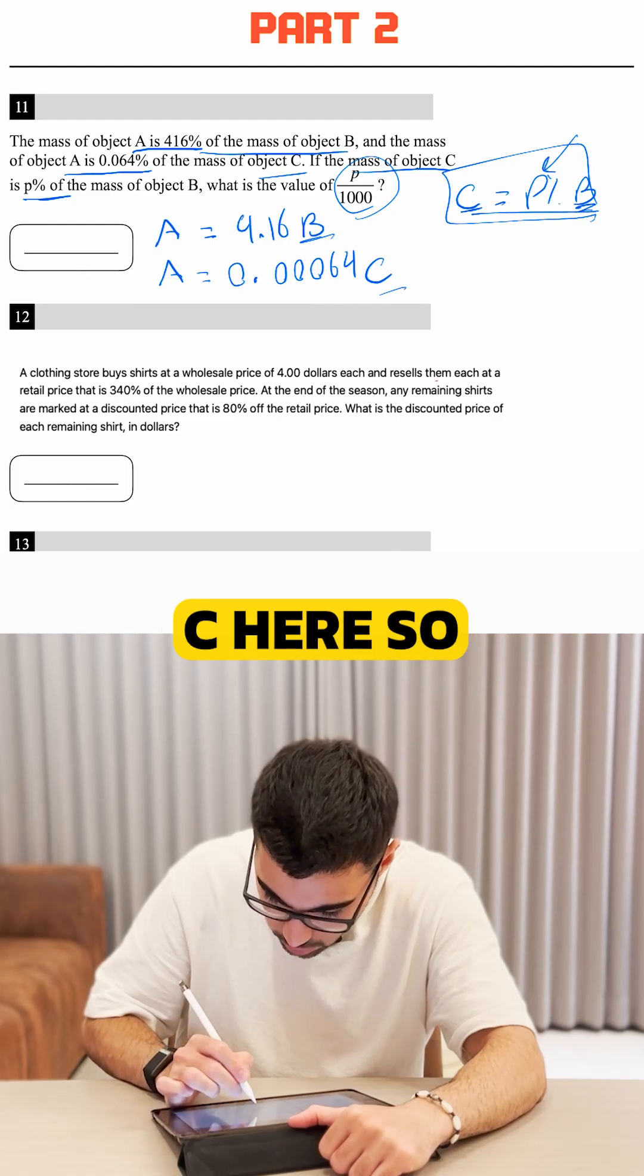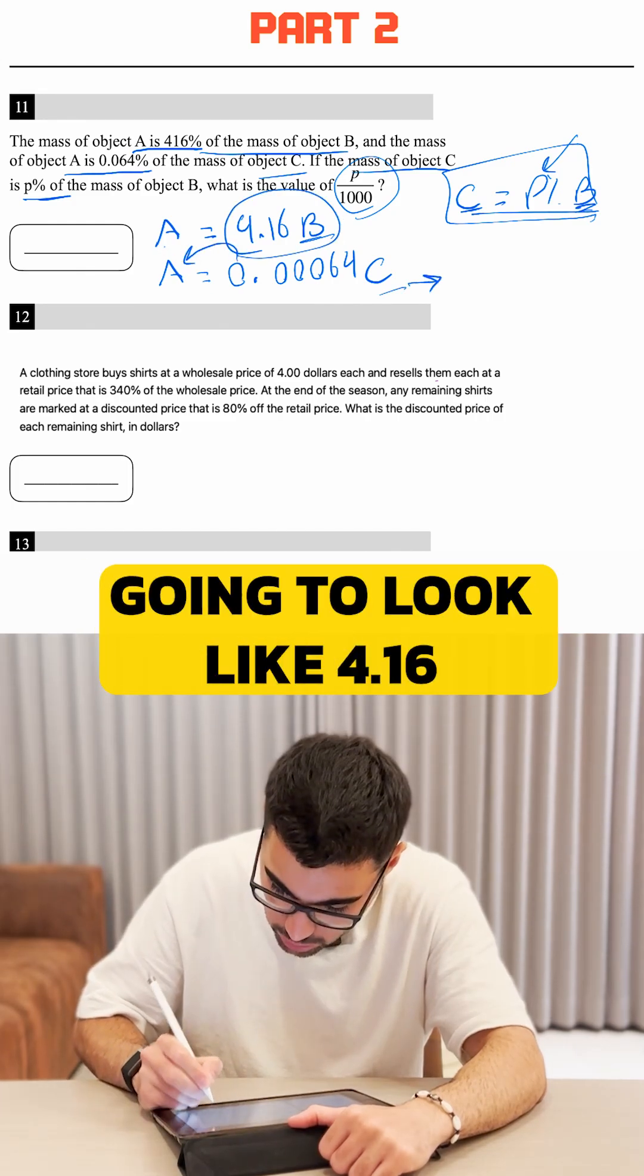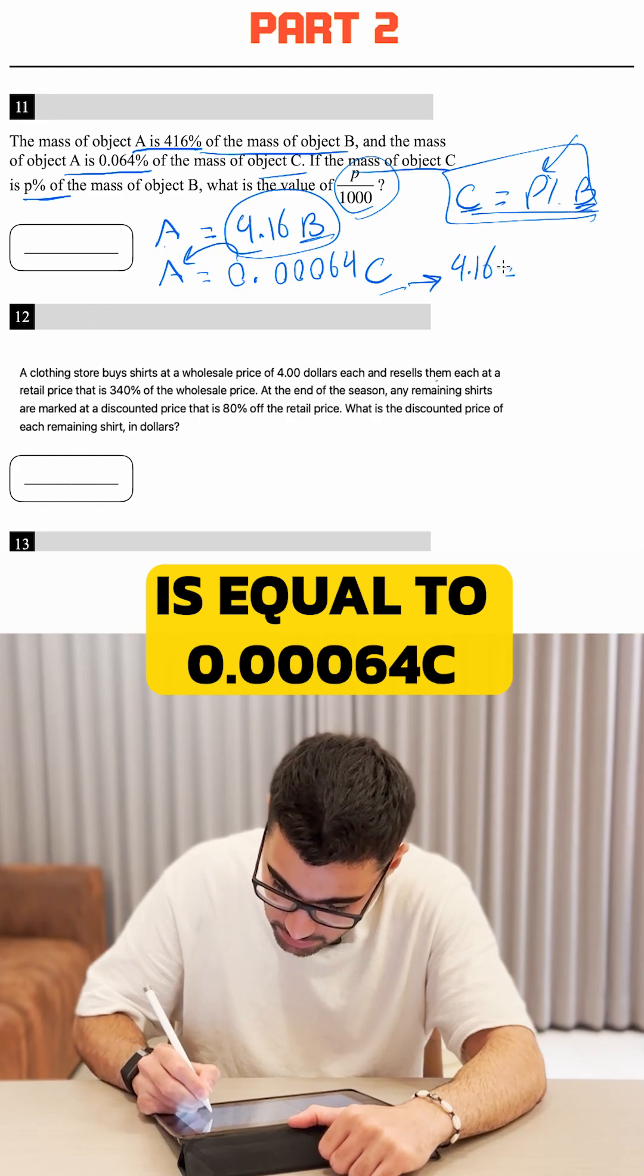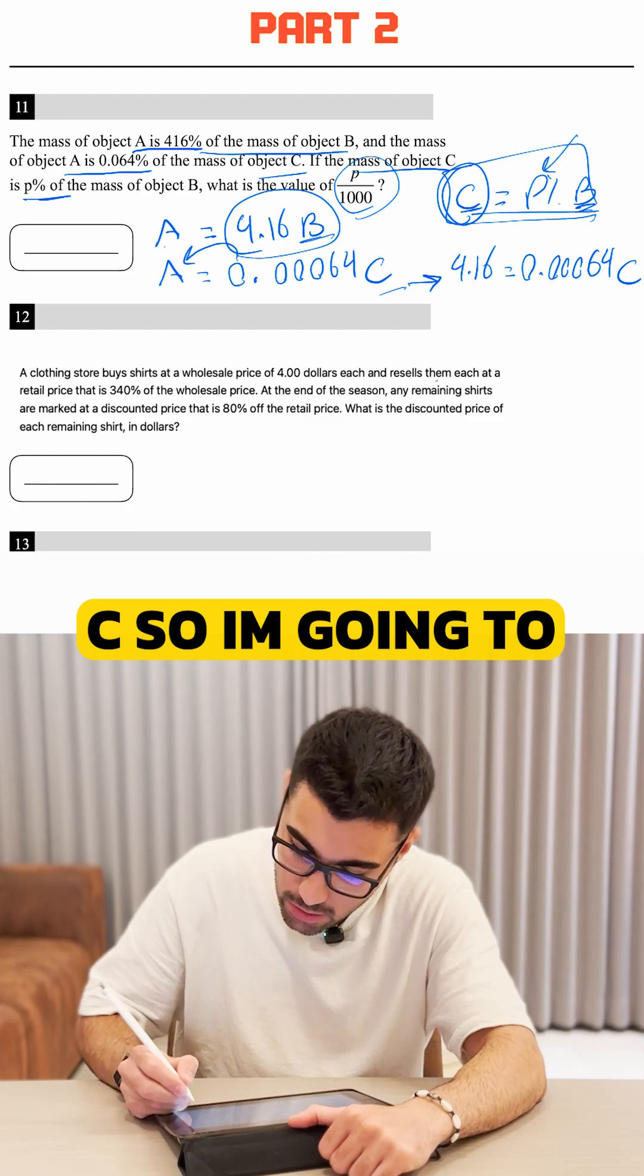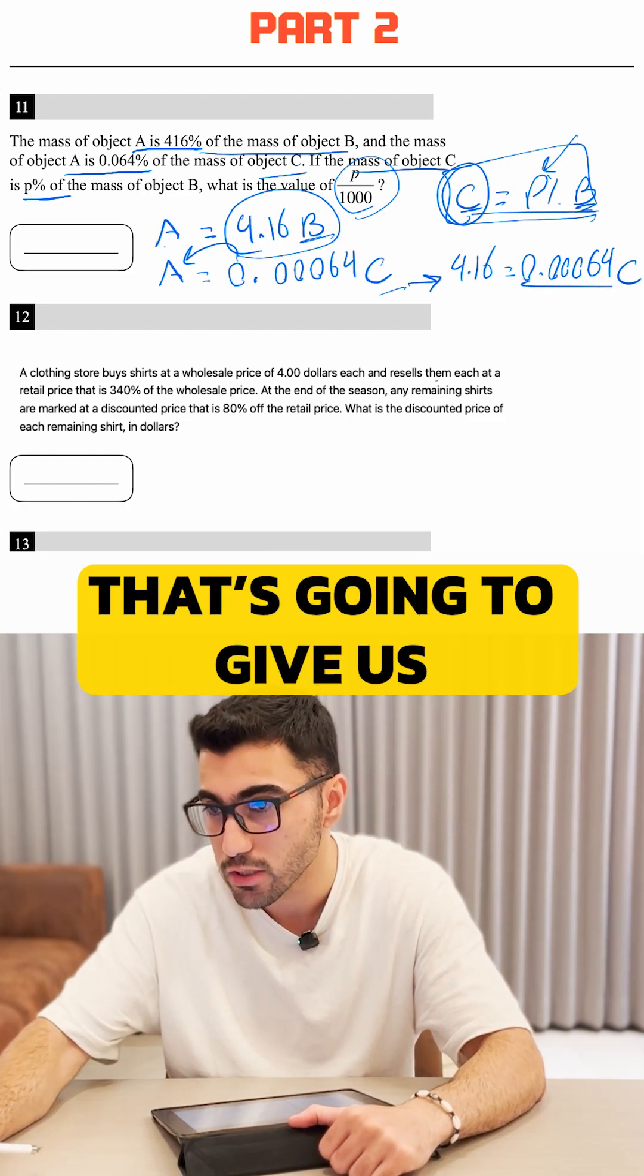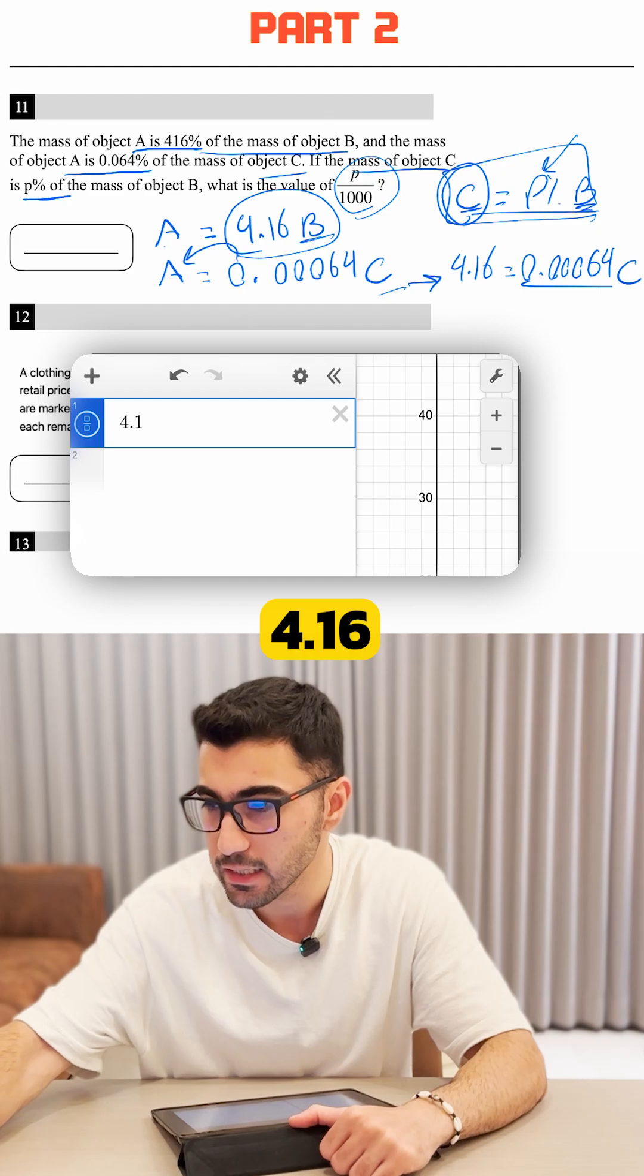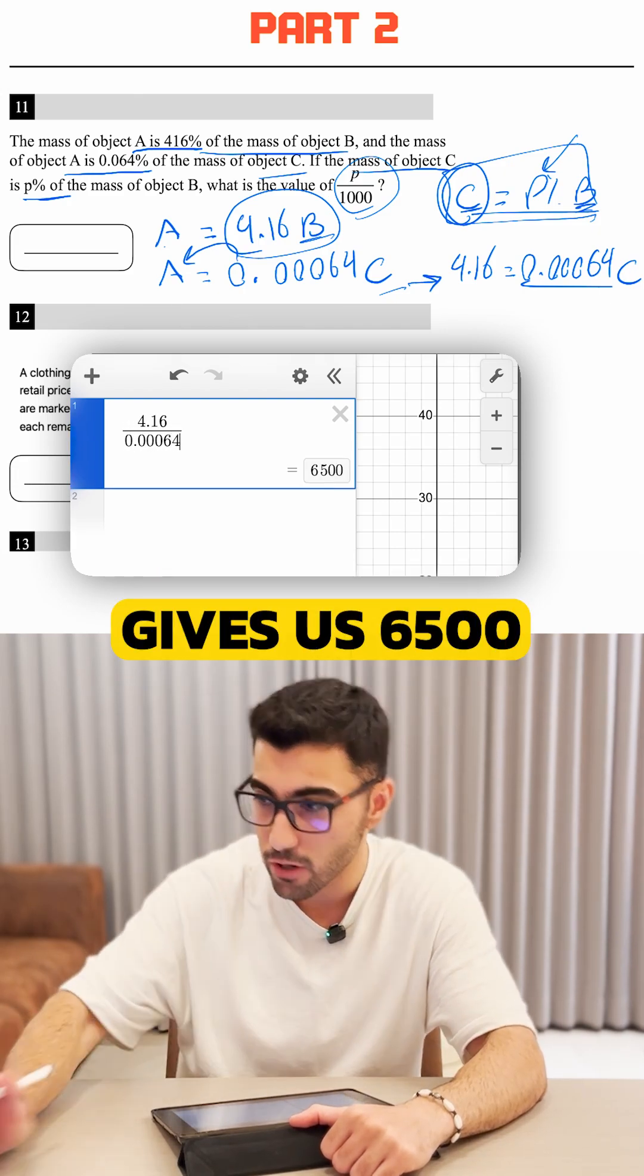We have B here and we have C here. So we know that A is equal to this many B. So let's just put that here. Then this equation is going to look like 4.16B is equal to 0.00064C. We need to isolate the C. So I'm going to divide both sides by 0.00064.